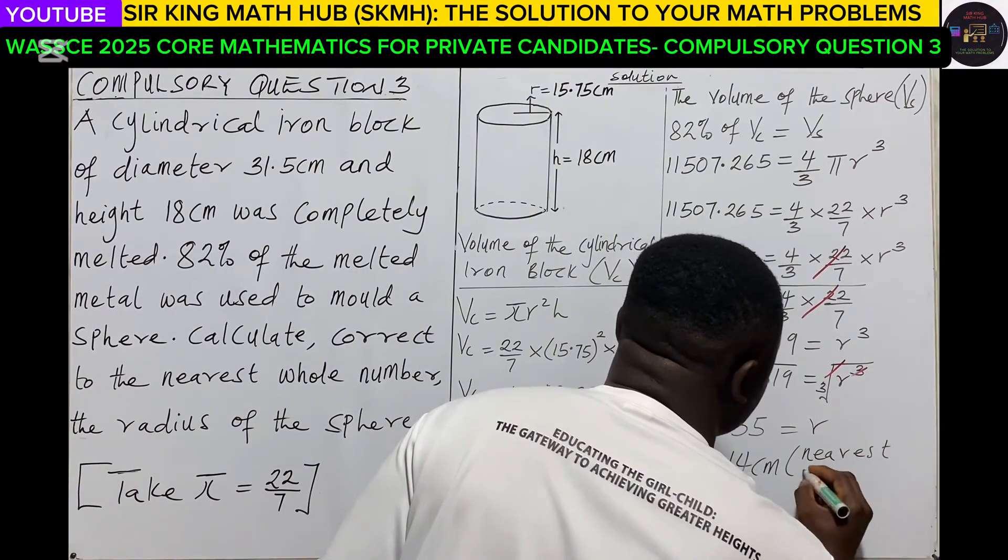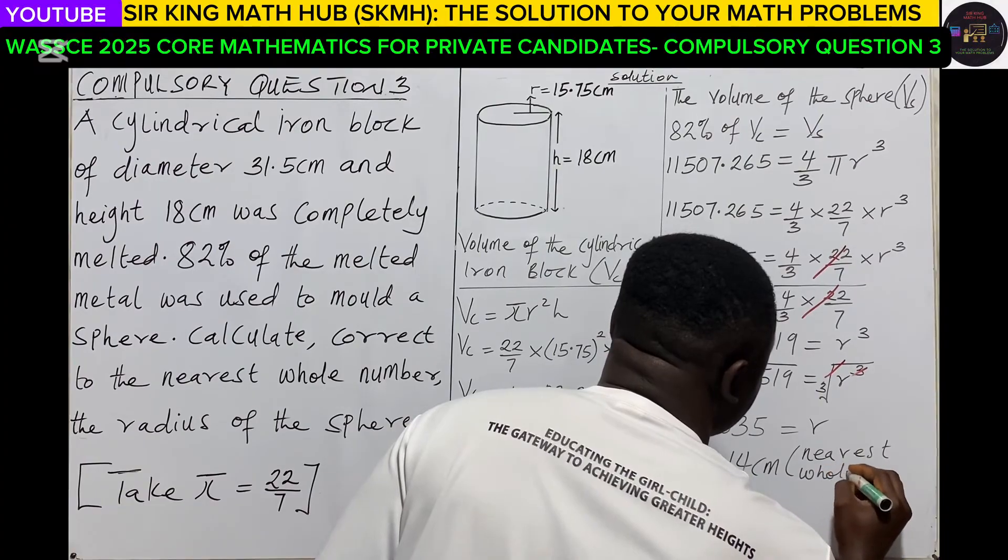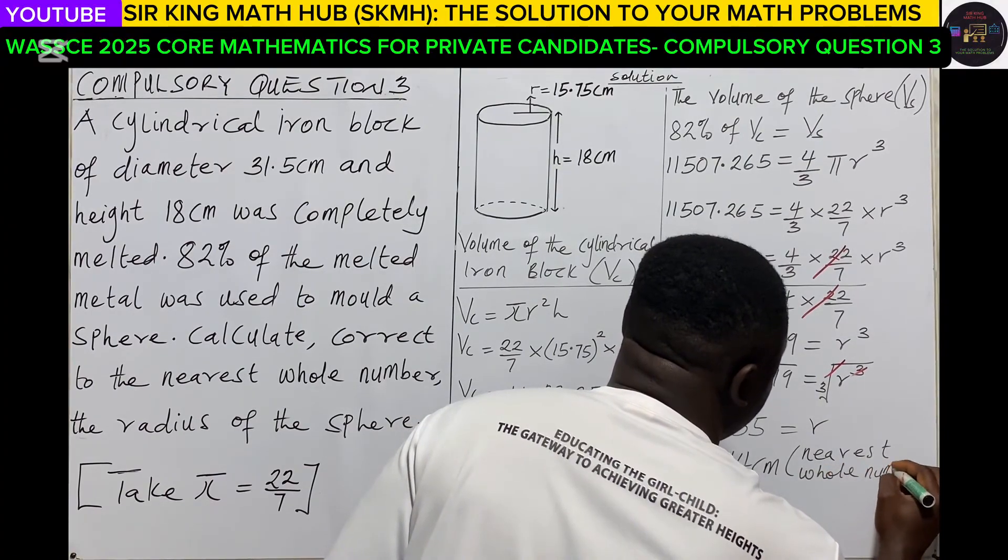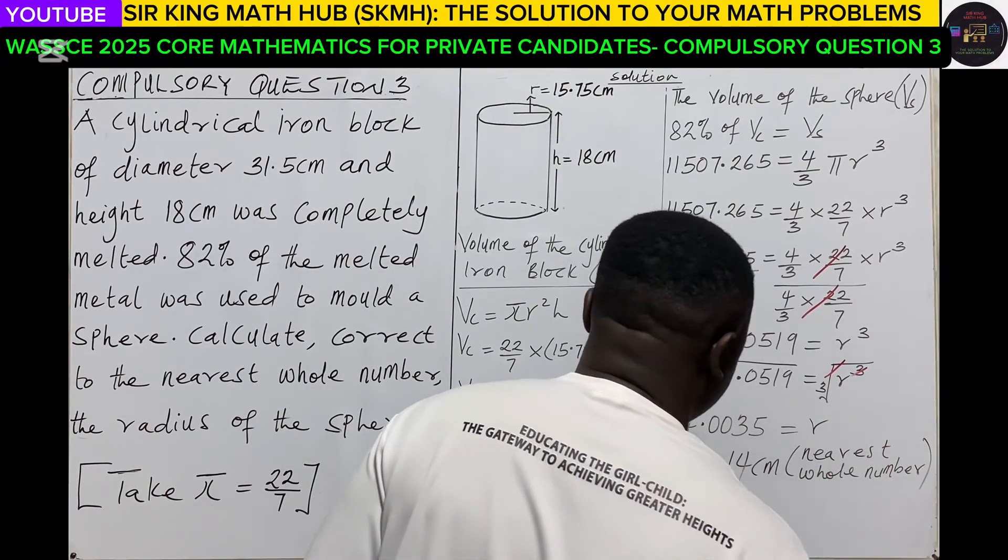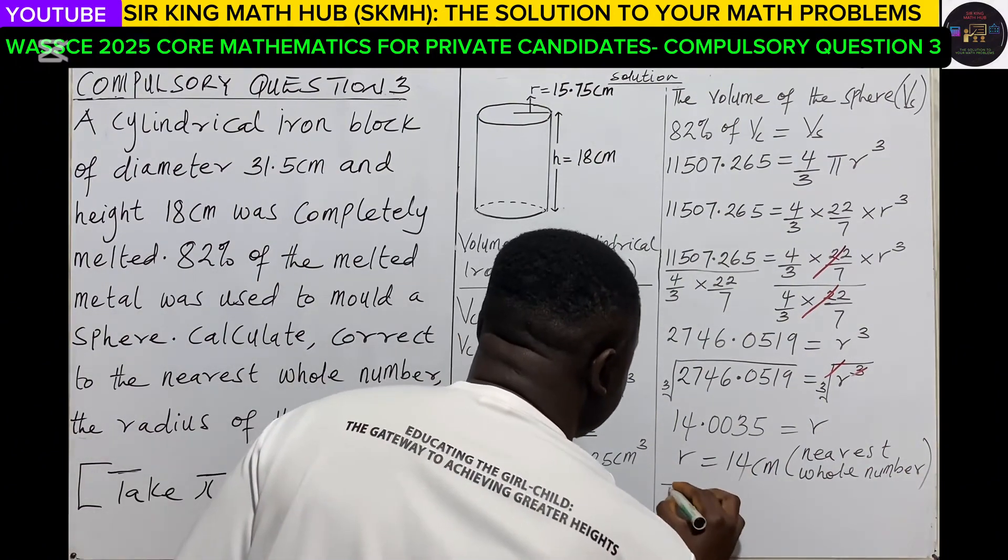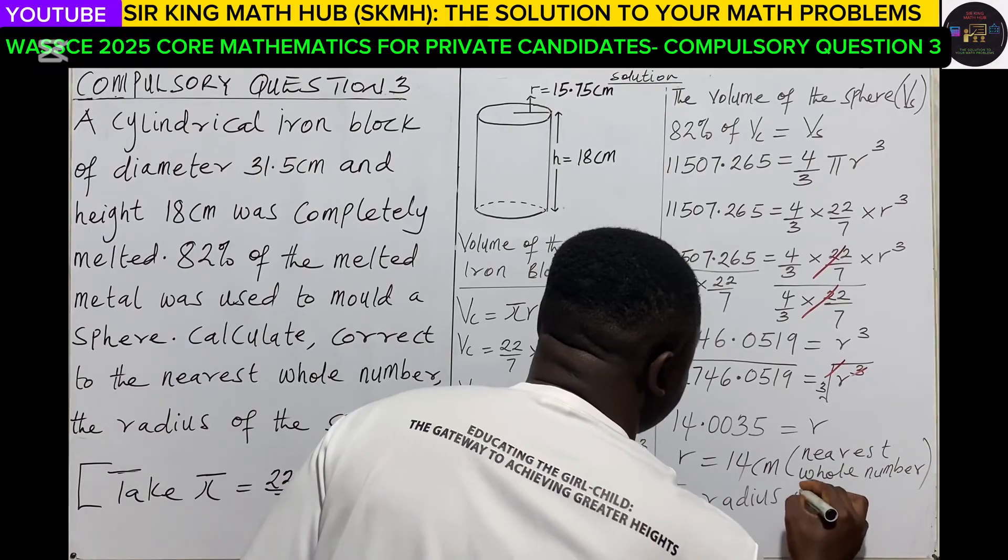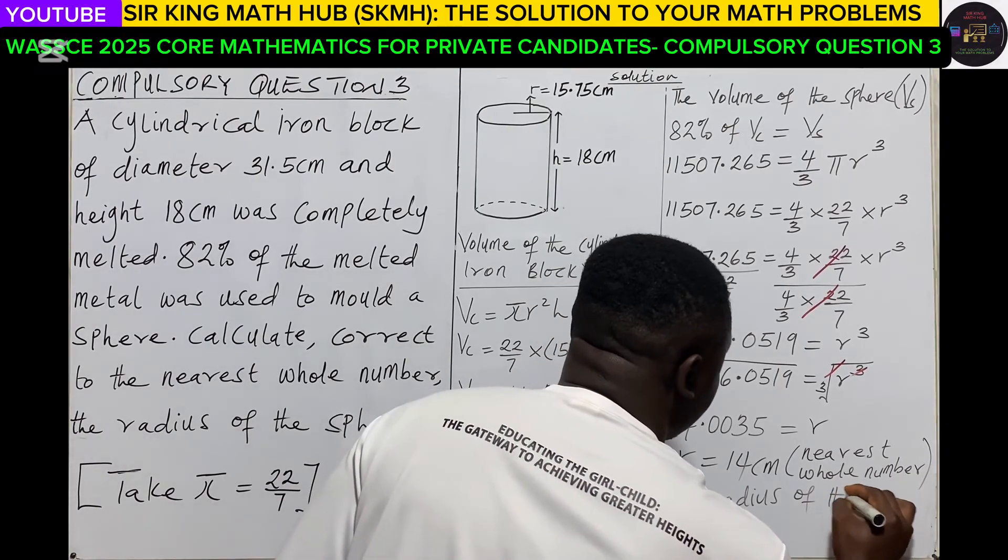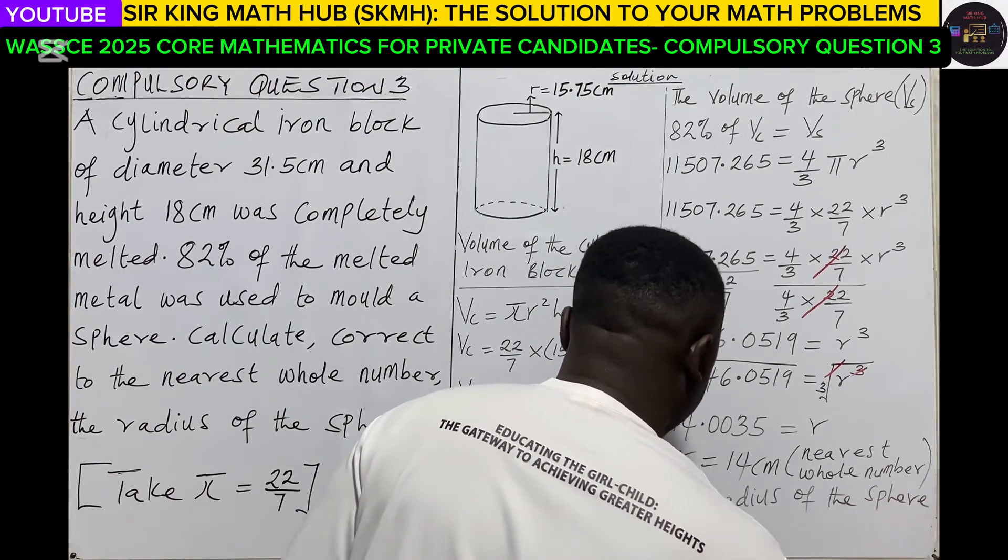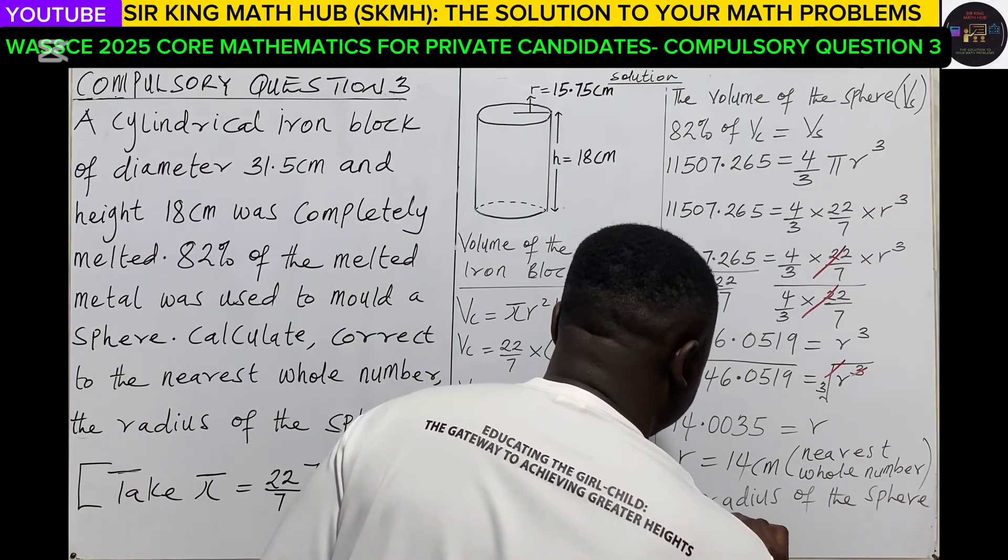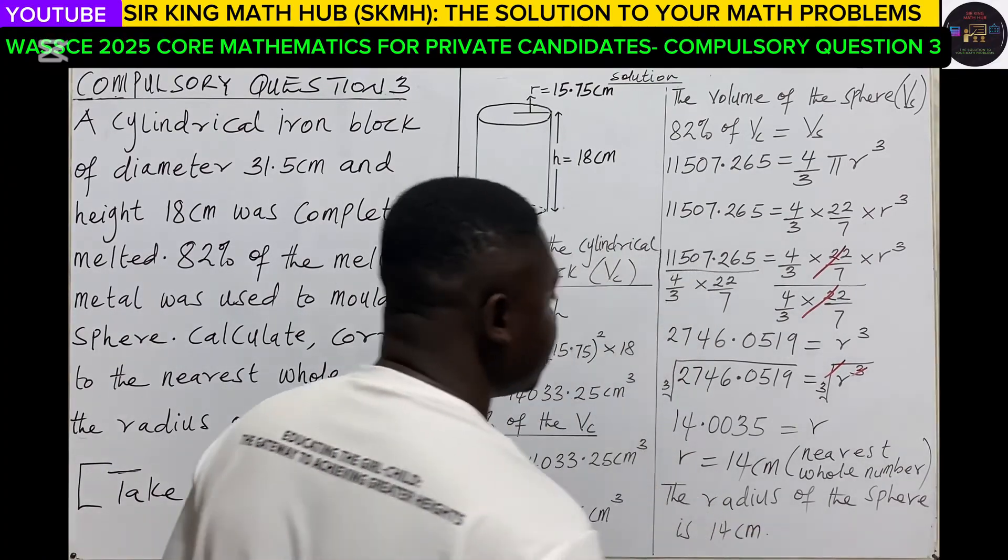So we can conclude that the radius of the sphere is 14 centimeters.